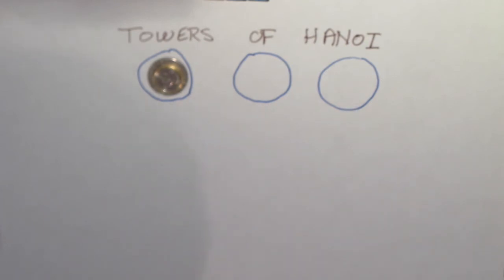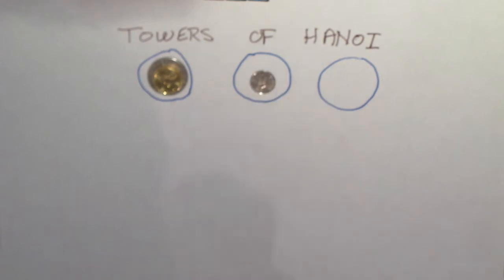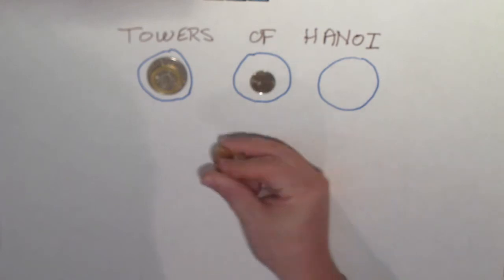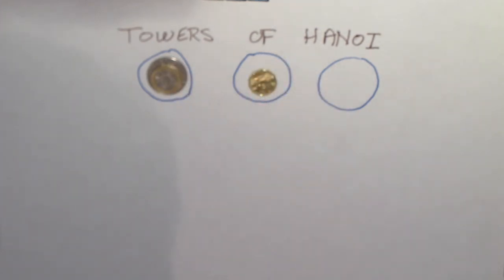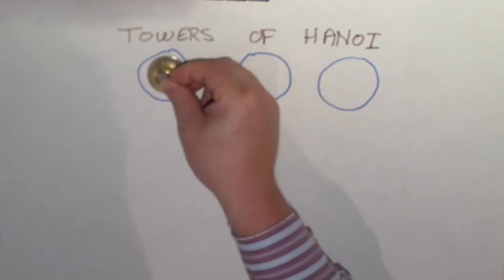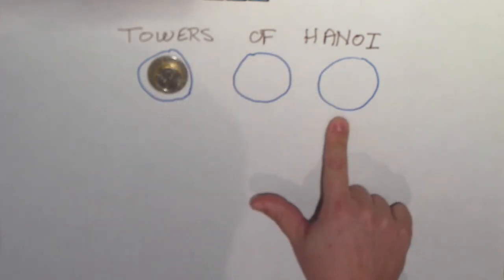Obviously there needs to be a few constraints on this. We need to have a couple of rules or else this is far too easy. Rule number one is I can only move one coin at a time. Rule number two is I can never put a bigger coin on top of a smaller coin so that it covers it. And the job is to get this stack of coins from this first circle over to the third circle.